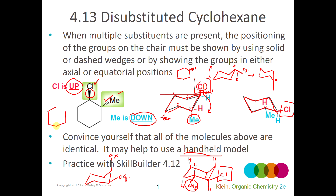If both groups had solid wedges — so both methyl groups (CH3 or Me means one single carbon with three hydrogens) — then I would have them on adjacent carbons, one coming straight up and the other coming up at an angle. So I would have one axial and one equatorial. If I did the ring flip, this one would become axial and this one equatorial, so I'd still have one axial and one equatorial. There'd be no way of getting around it with this particular molecule.